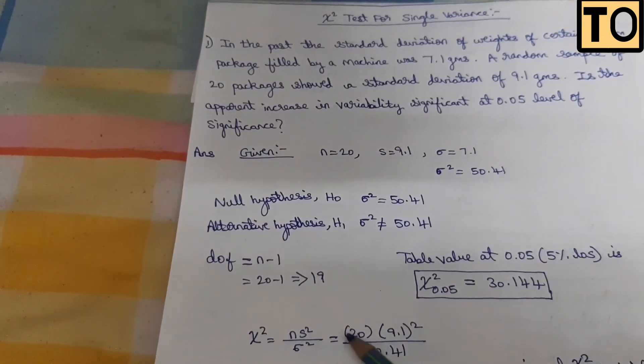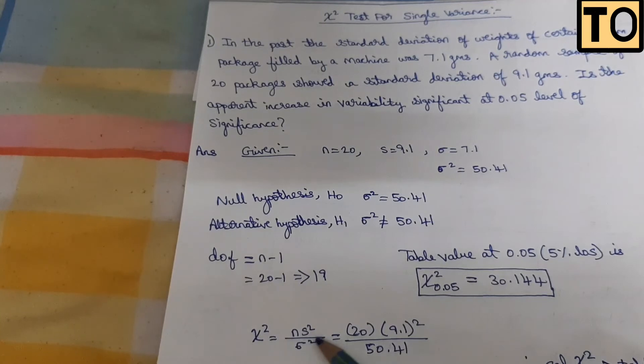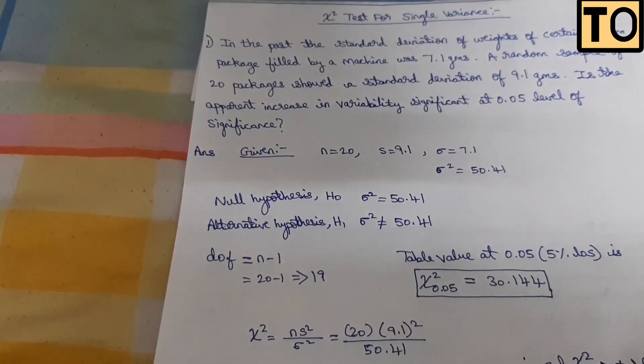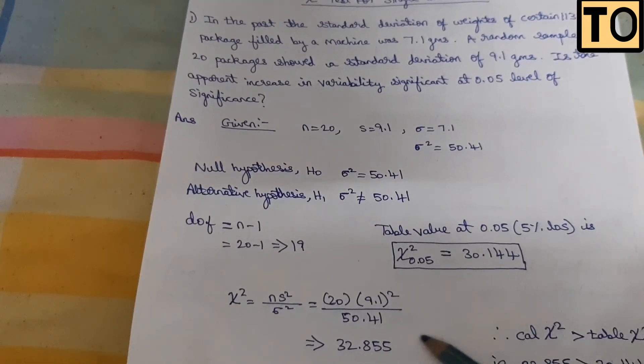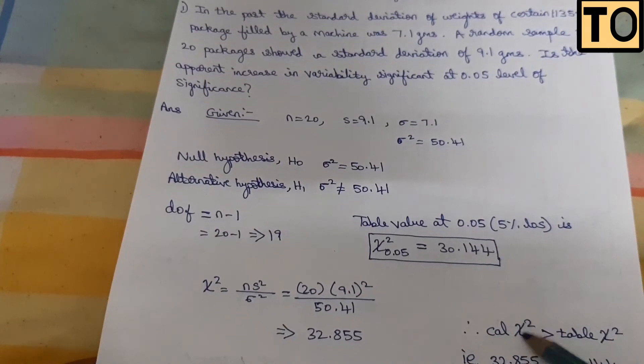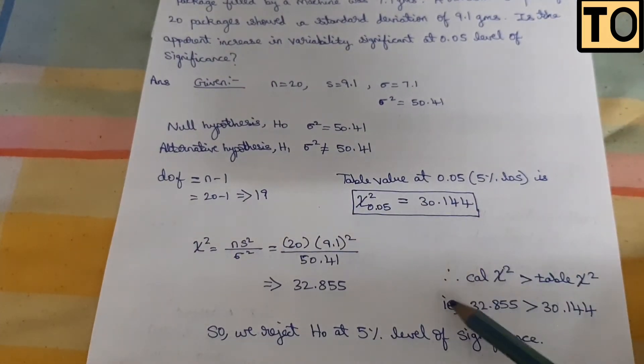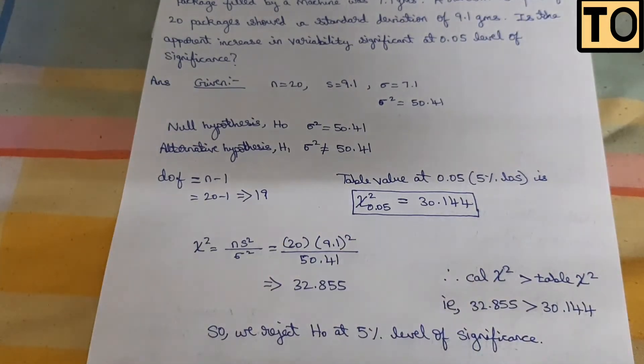We substitute the formula: calculated chi-square equals n minus 1 times S squared divided by sigma squared. Substituting all values, the answer is 32.855, which is greater than the table value. Therefore, we reject H0 at 5% level of significance.